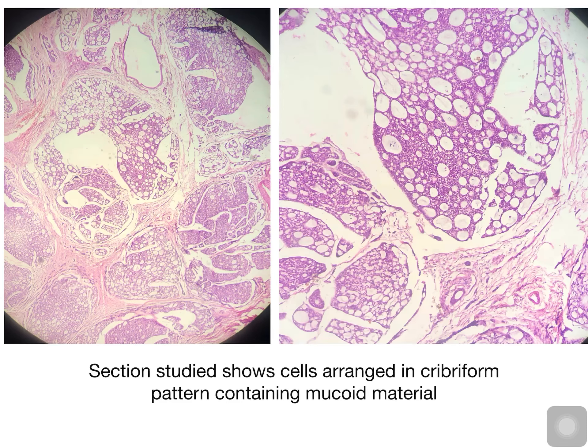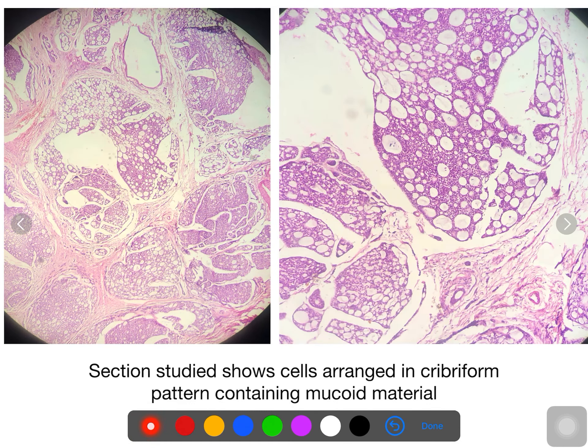Here in this picture, section study shows cells arranged again in cribriform pattern, and we can see the pseudocysts which are formed containing mucoid material.